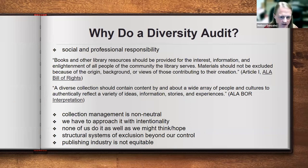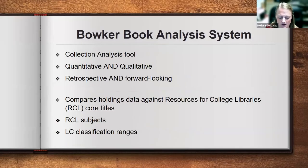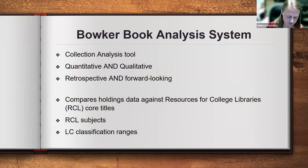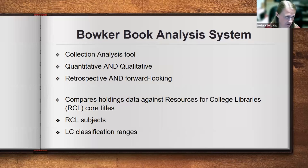We used several different methods in our assessment, but today I'm going to talk specifically about how I used BBAS. This collection analysis tool gives you both quantitative and qualitative data. It's both retrospective — what do we have — and forward-looking — what should we get. Once your library's holdings are uploaded into BBAS, it essentially compares your holdings against the list of items that RCL has identified as core titles for a university library. You can run reports either by LC class or by RCL's set list of subjects.